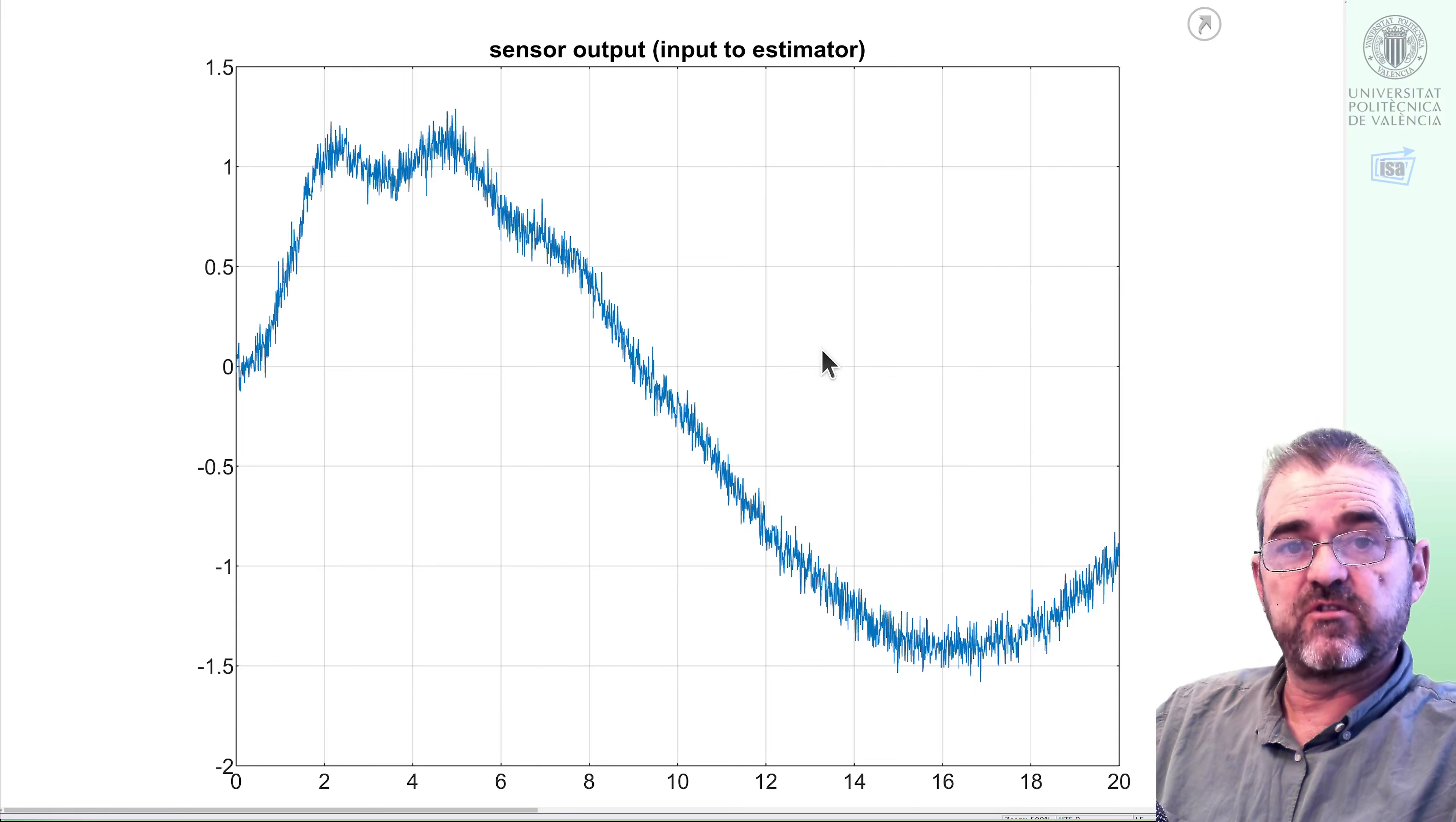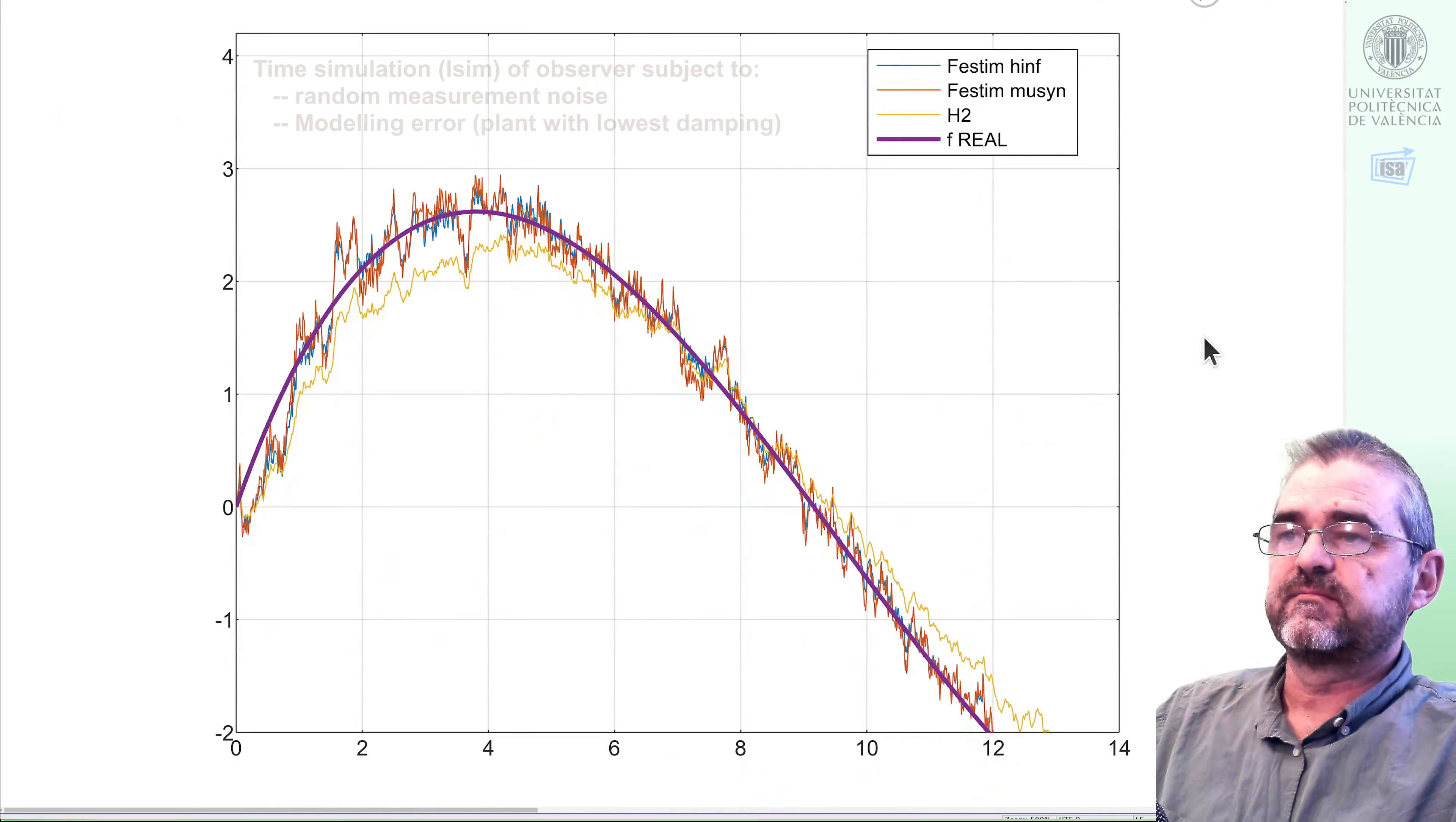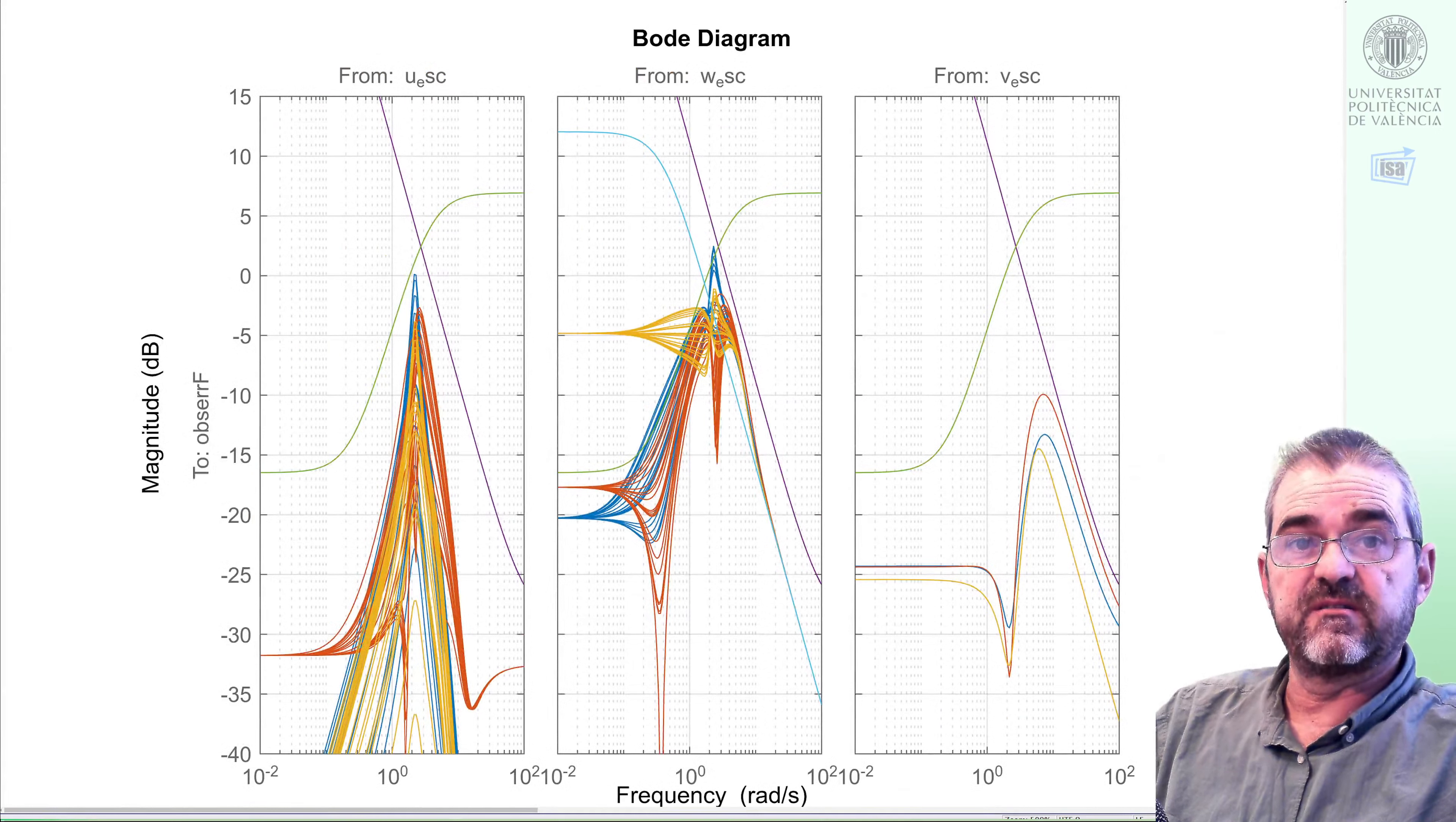Well, with this sensor output, if I lsim the H infinity, the mu-synthesis, and the H2 observer, and I plot the estimations and the real signal force, then I get this behavior. I see that the H2 yellow thing somehow has a significant bias in the tracking of this force. Mu-synthesis and H infinity have a better tracking at this low frequency signal, as expected from this central bode diagram.